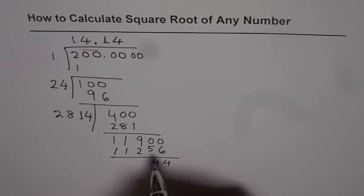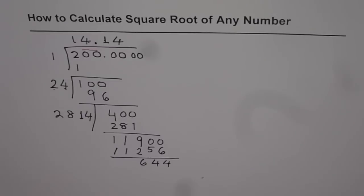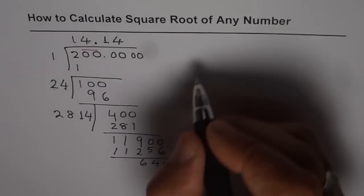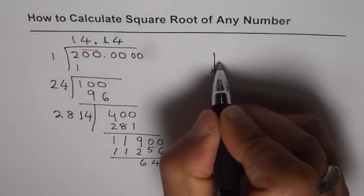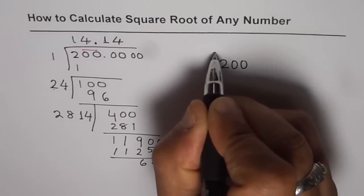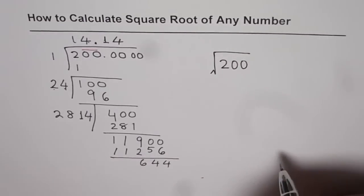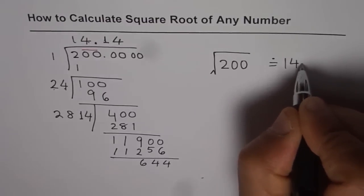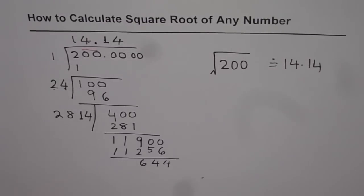When you take away, you get 644 as the remainder. But anyway, the closest we have got for two decimal places is 14.14. Therefore, we can say square root of 200 rounded to approximately two decimal places is equal to 14.14.